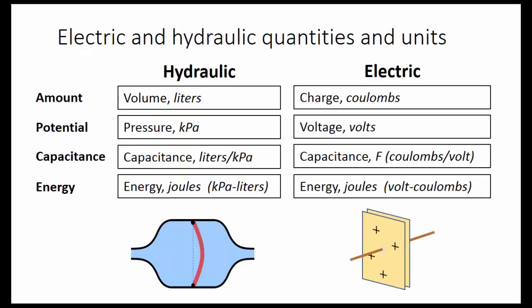In summary, volume is like charge, pressure is like voltage, capacitance is liters per kilopascal for the hydraulic, or coulombs per volt for the electric, also known as farads, and the energy is in joules in both cases, kilopascal liters for this type of capacitor, and volt coulombs for this type of capacitor.